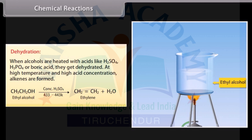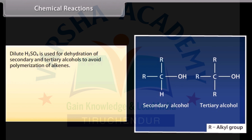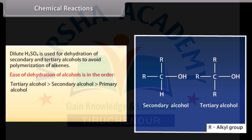When alcohols are heated with acids like sulphuric acid, phosphoric acid, or boric acid, they get dehydrated. At high temperature and high acid concentration, alkenes are formed. Dilute sulphuric acid is used for dehydration of secondary and tertiary alcohols to avoid polymerization of alkenes. The ease of dehydration of alcohols is in the order: tertiary alcohol, followed by secondary alcohol, and then primary alcohol.